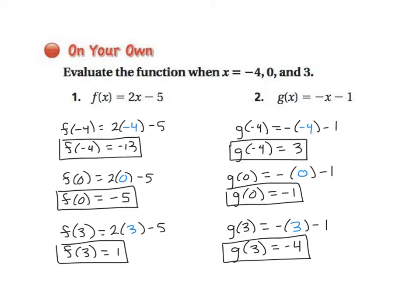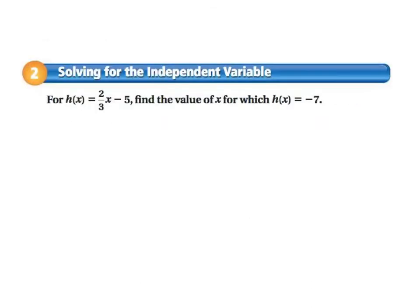Okay, so let's try some different types of problems. So here, we're given a function h of x, and the function is 2 over 3x minus 5. So they would like us now to find x for which h of x is equal to negative 7. So notice this time, they're not saying x is negative 7, they're saying h of x is negative 7. So that means I'm going to replace this with negative 7.